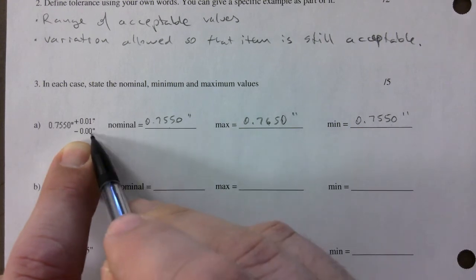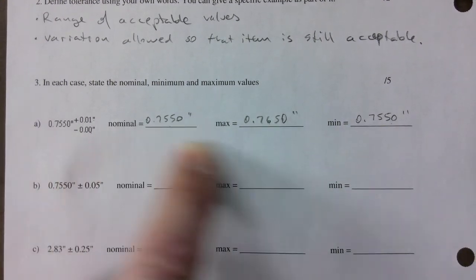Yeah, we're good there. Minimum is 0.7550, which is the same as your nominal if you notice, but you're subtracting nothing. There's no tolerance here.